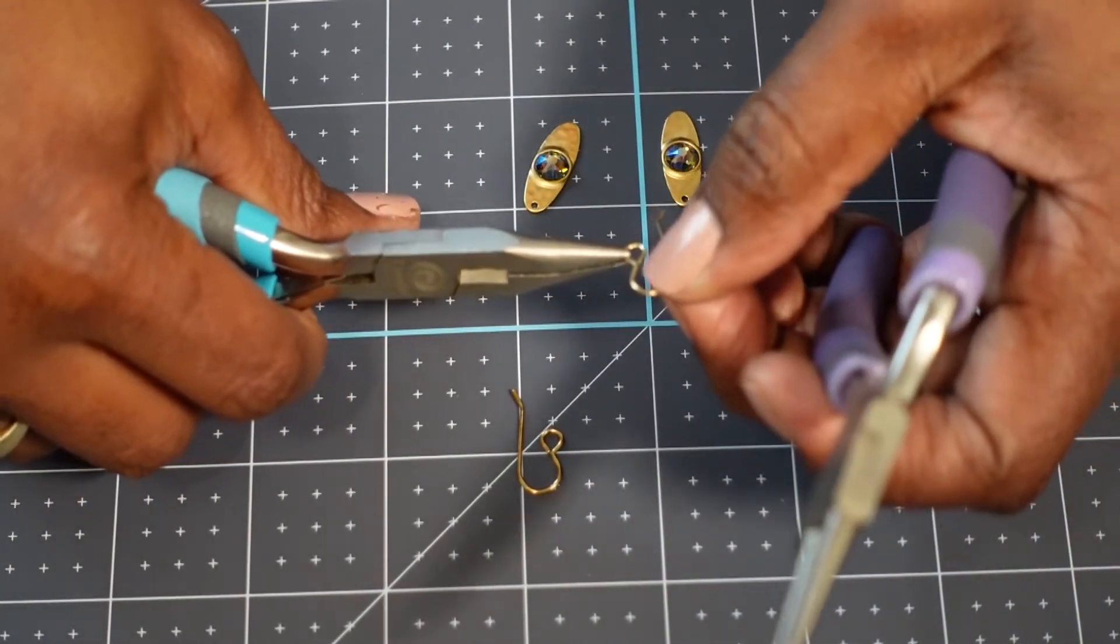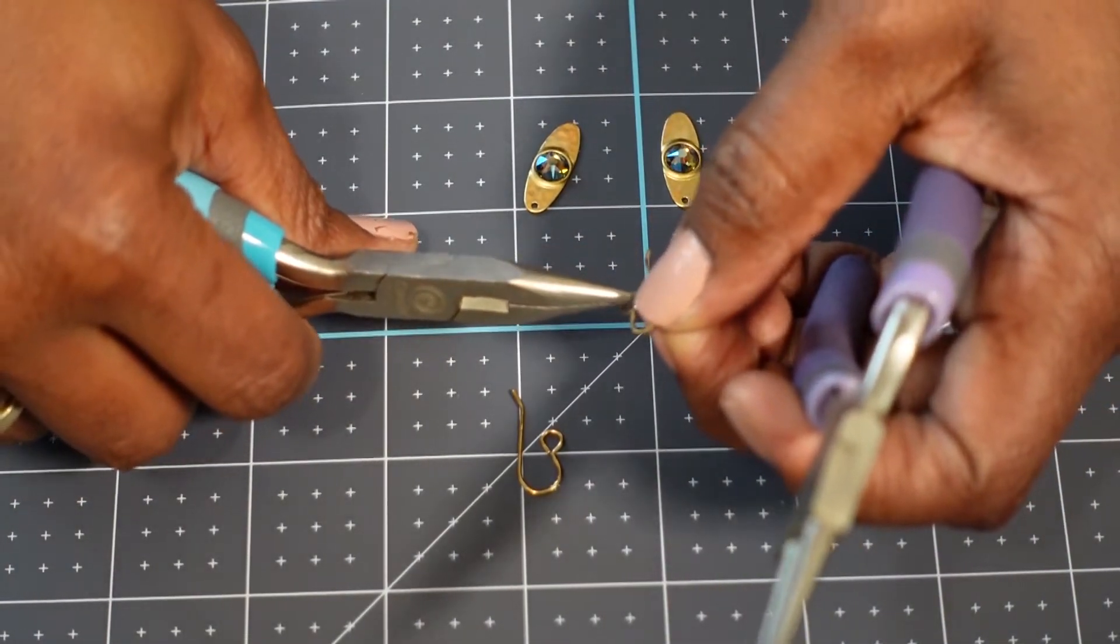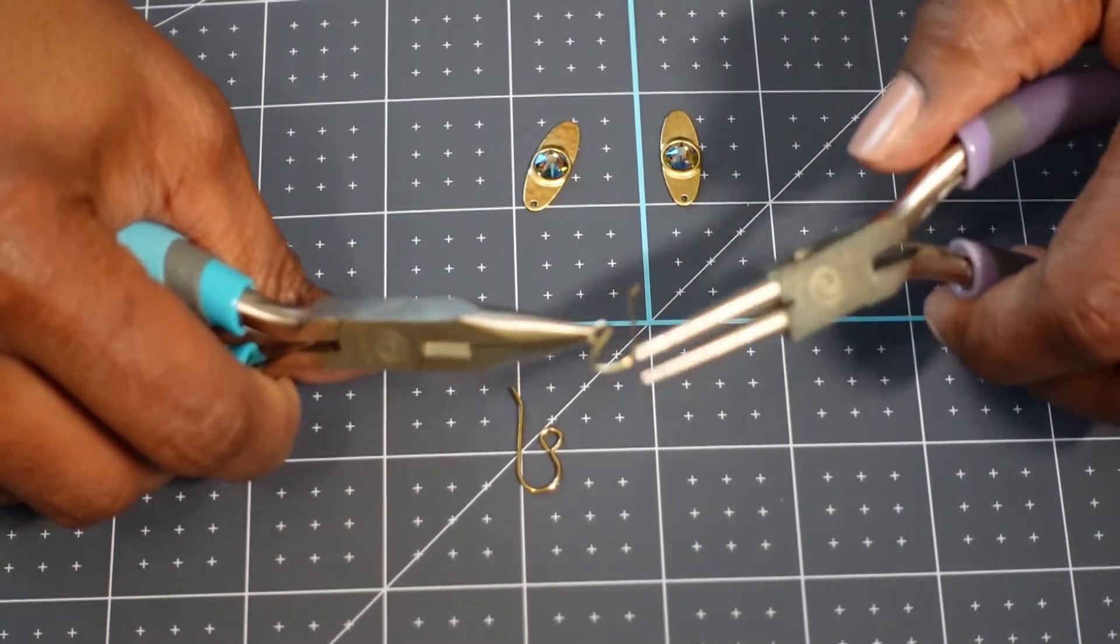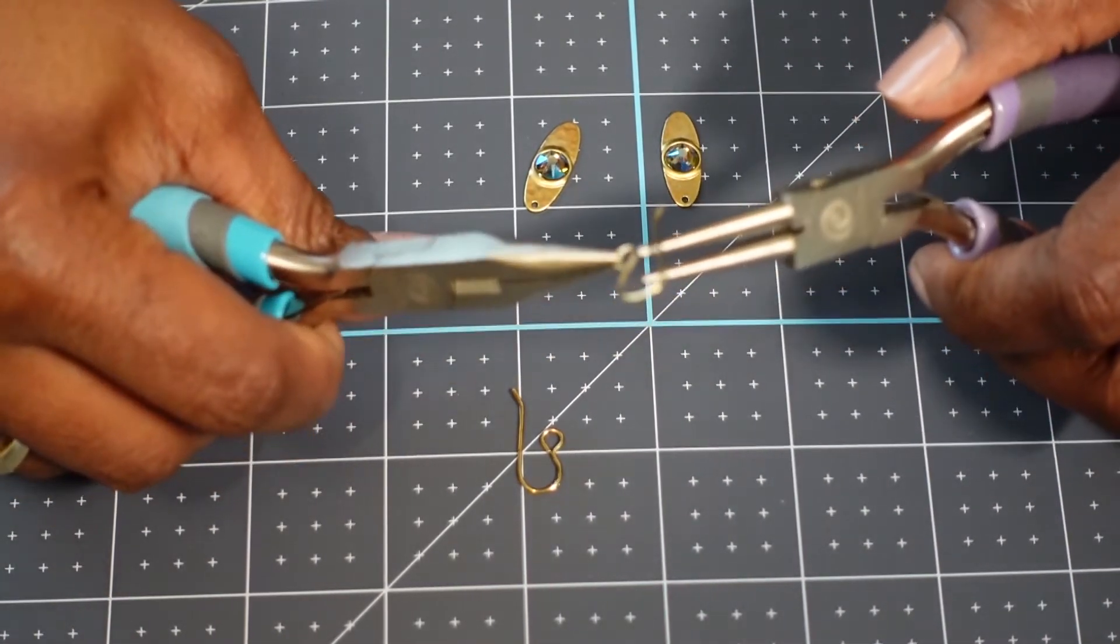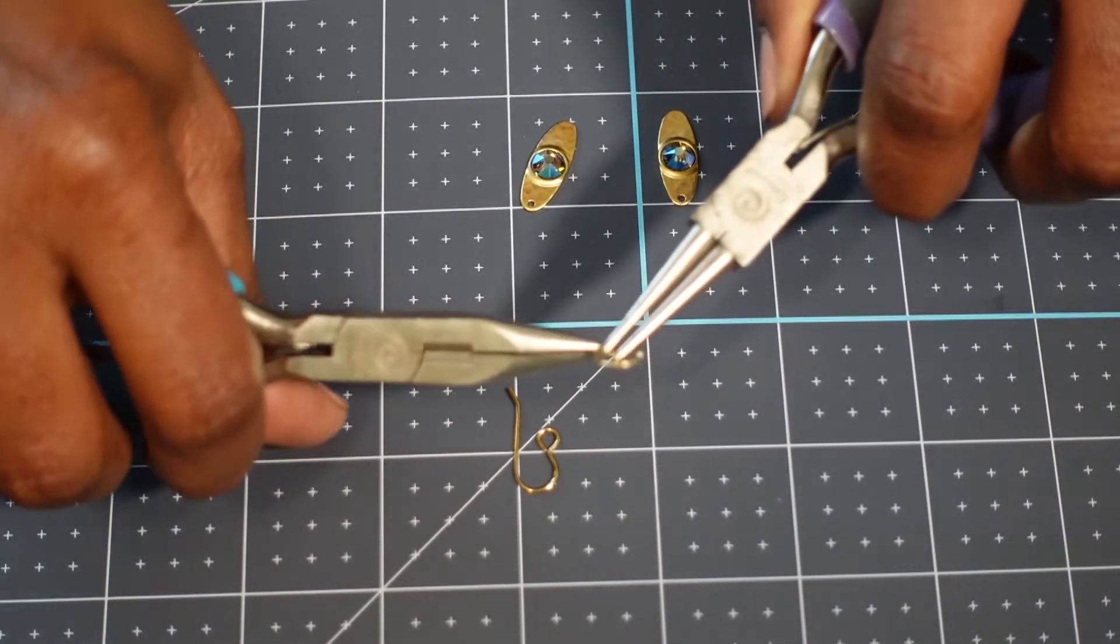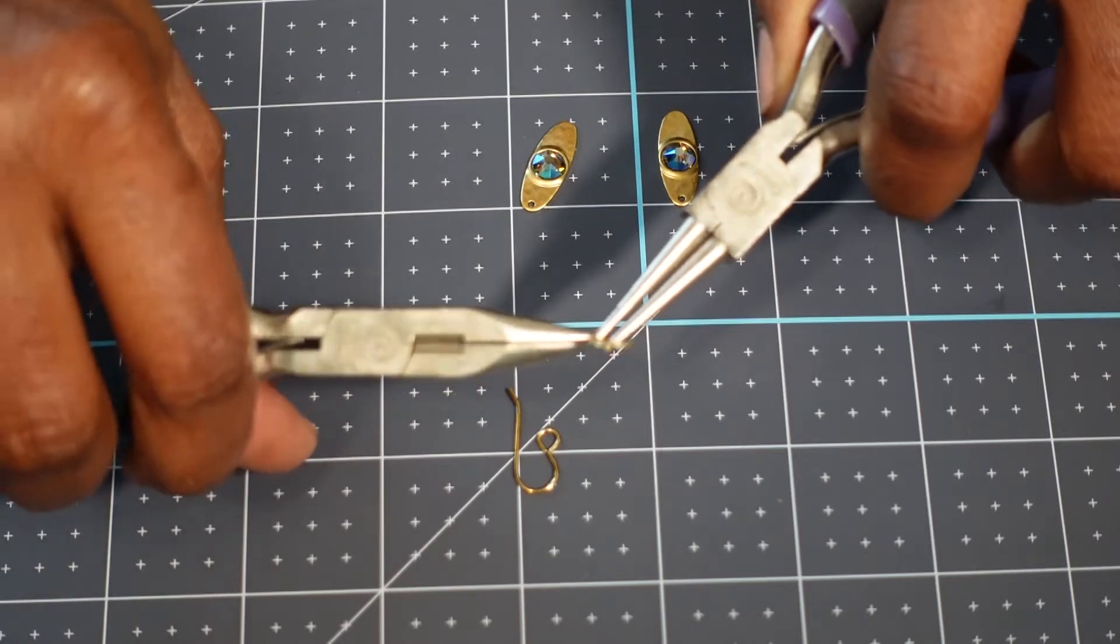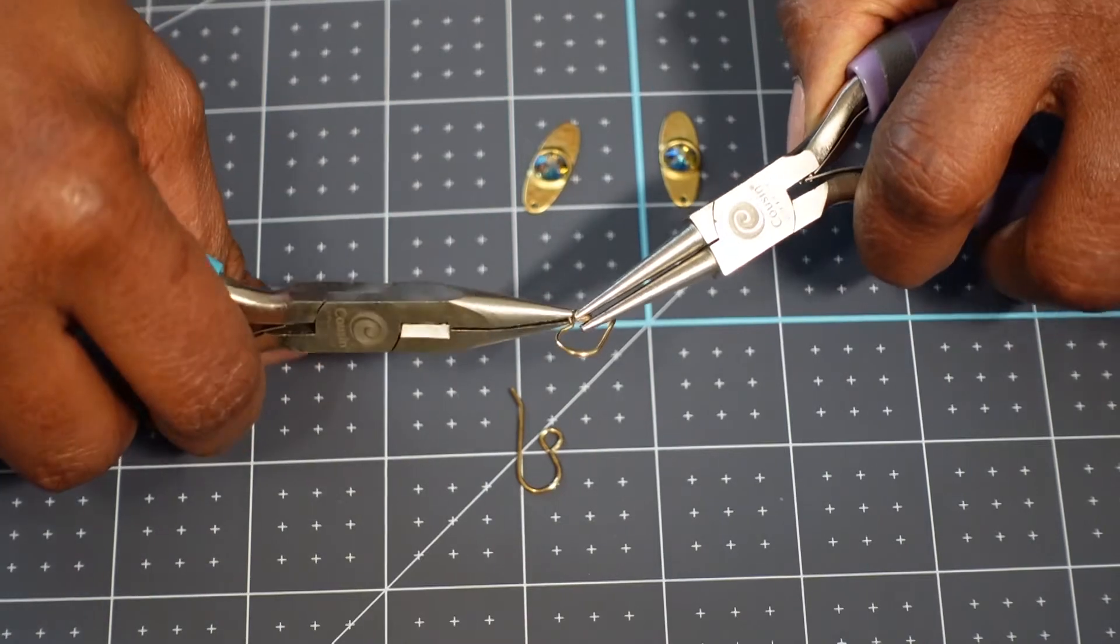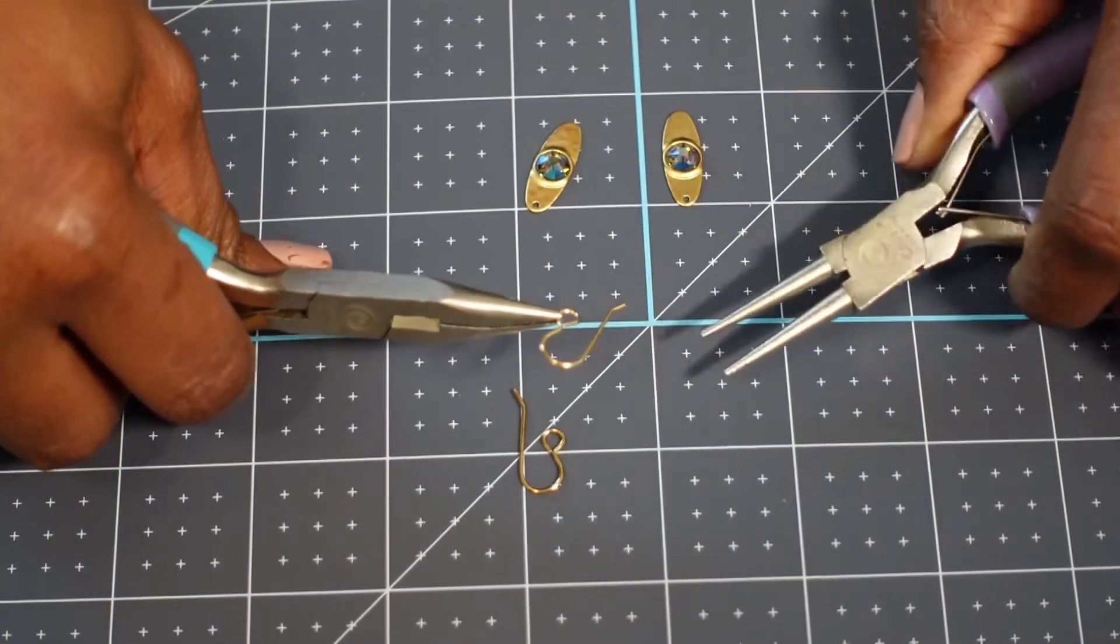And sometimes it's easier to kind of grab it in the middle because you're trying to avoid the part that goes in your ear. So I'm going to just take it and I'm going to bend open the wire by just twisting it just a tiny bit. You don't want to twist it a lot. You just want to twist it just enough to get the pendant on.